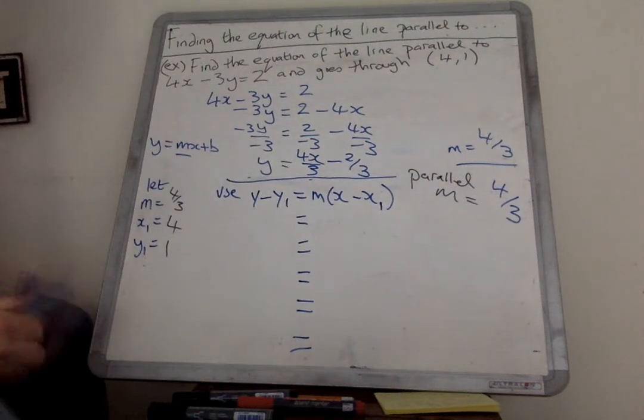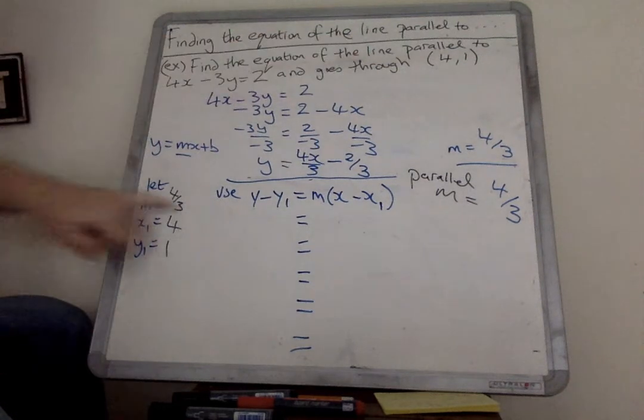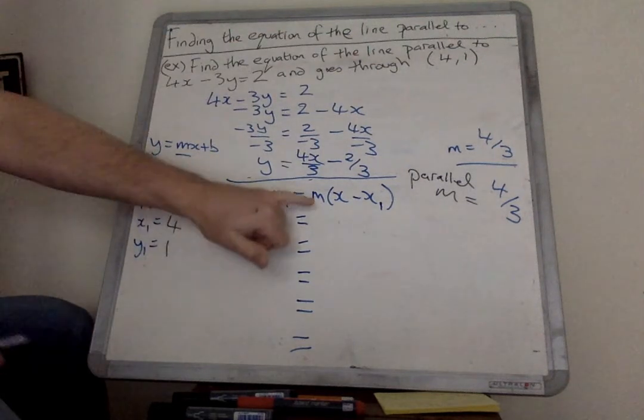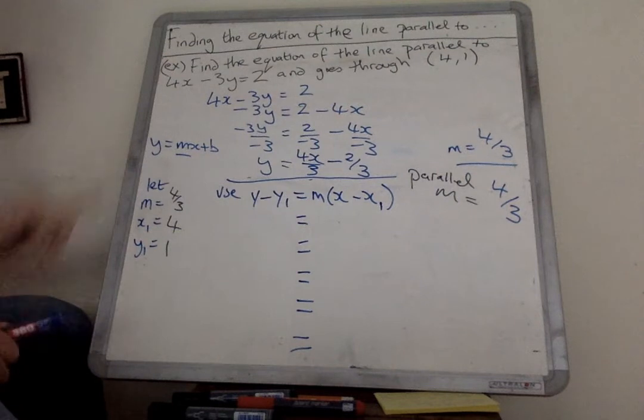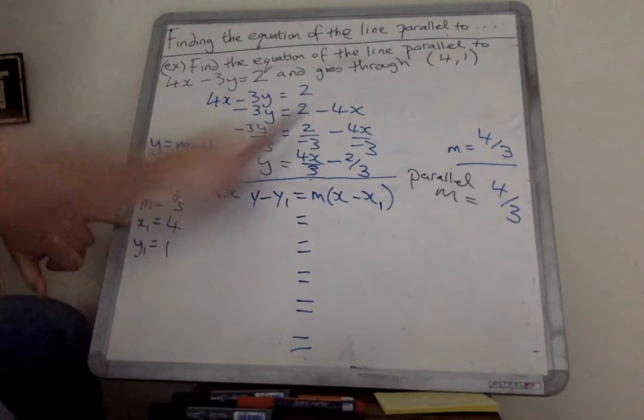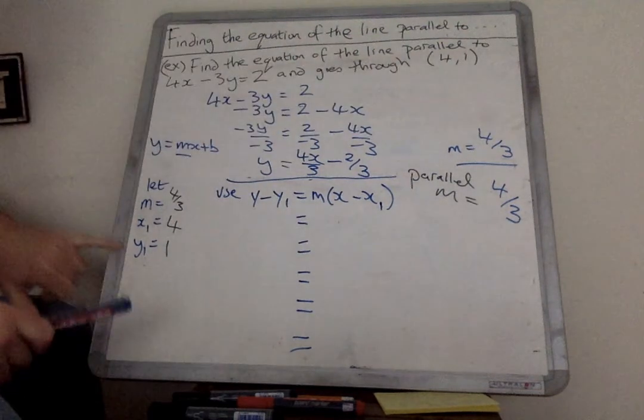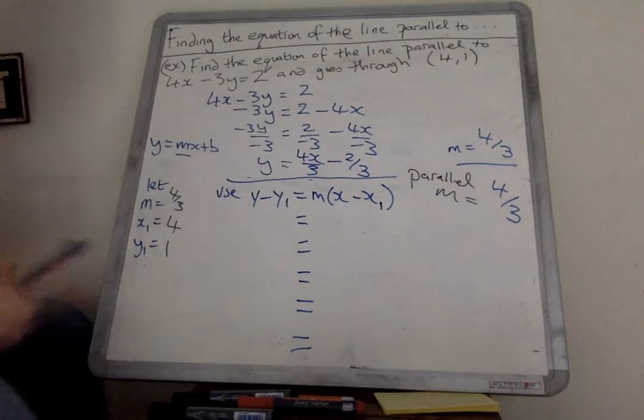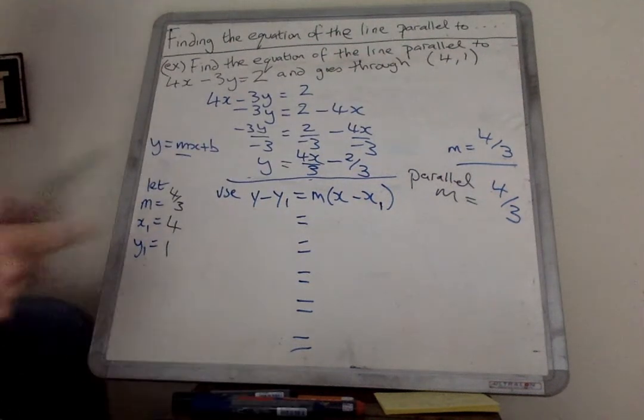Now we still need to find the equation of the line, and we're going to use the equation y minus y1 equals m times x minus x1. So we need our substitutions. We already know we need the parallel m, which is 4 thirds. The x value I'm going to get from the coordinate, and the y value is its little partner there.